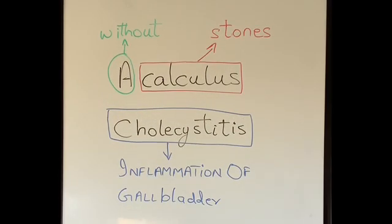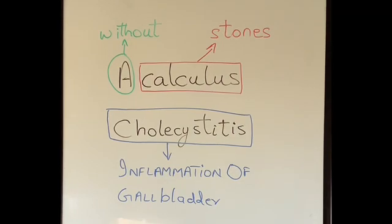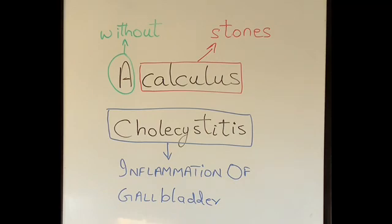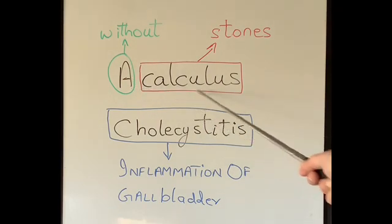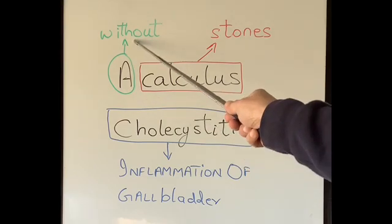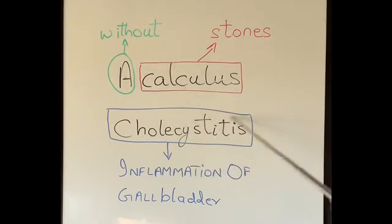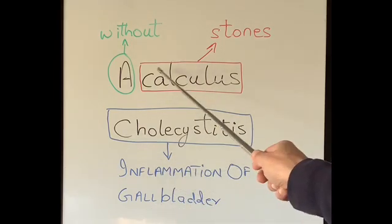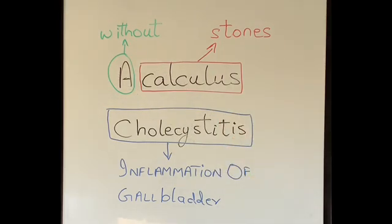So what does acalculous cholecystitis mean? As you might remember in my last two videos, when I was talking about inflammation of the gallbladder, also called cholecystitis, I mentioned that the commonest cause is gallstones. However, in less than 5% of patients who get inflammation of the gallbladder, they do not have gallstones. The explanation is in the name: 'A' means without, 'calculus' means stones, 'cholecystitis' means inflammation of the gallbladder. So inflammation of the gallbladder that happens in the absence of stones is called acalculous cholecystitis.